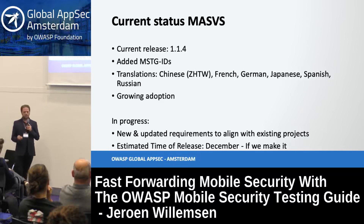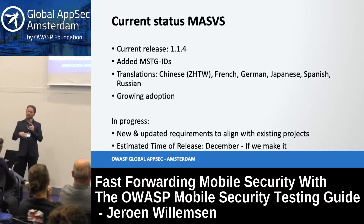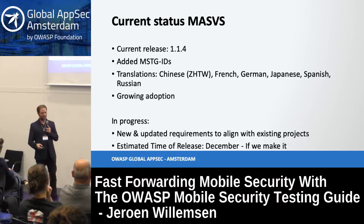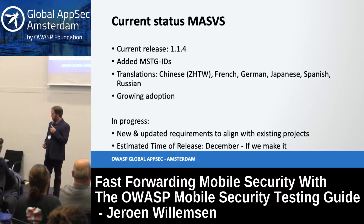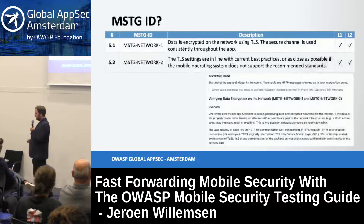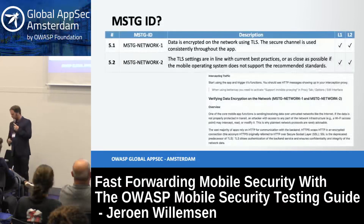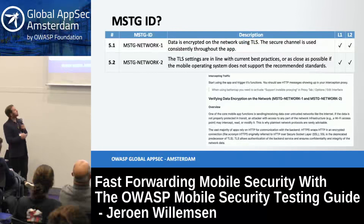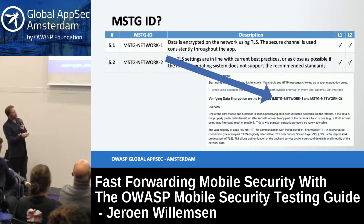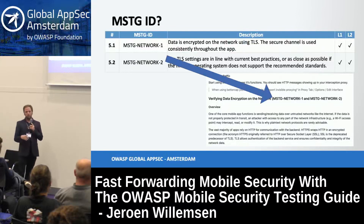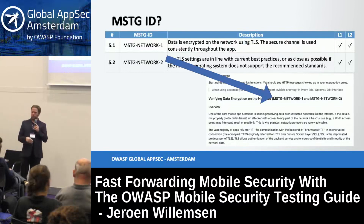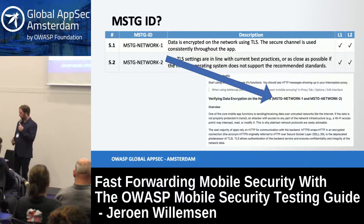We hope to release it all in December because we still have to go through the translation process. Regarding those MSTG IDs — here's an example of a modern layout of the network requirements. As you can see, the ID in the MASVS correlates with the ID in the MSTG, so you can just search on GitHub and it will be fairly easy to see how we want to explain that requirement to you.